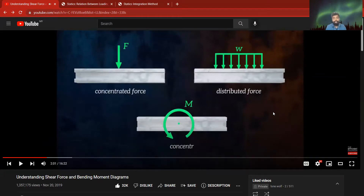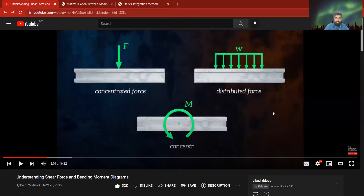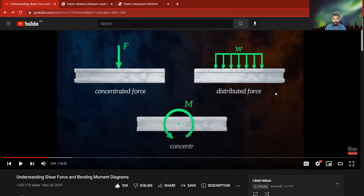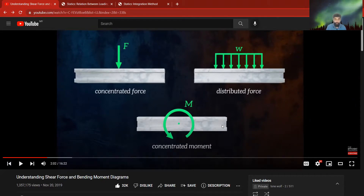This beam is considered to be rectangular in shape. To calculate the forces in this beam, we typically use the graphical method. The types of forces we use during calculation include concentrated forces, distributed forces, and concentrated moments.